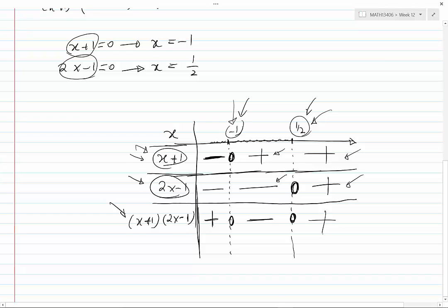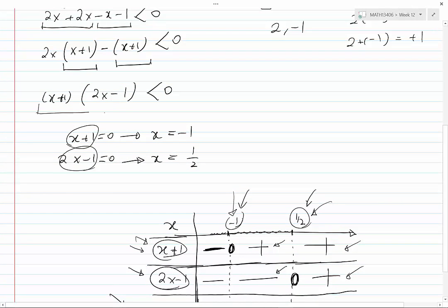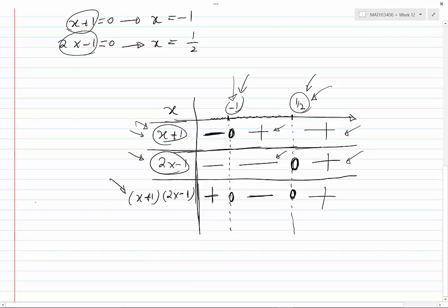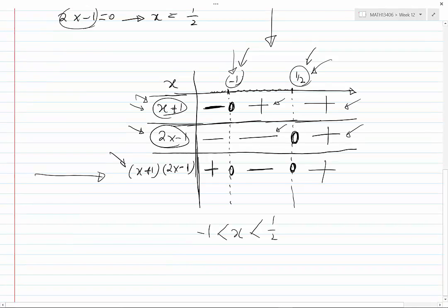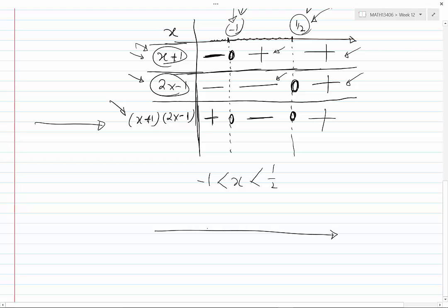Looking at our inequality, we need the product to be less than 0 — that is, negative. From the table, the product is negative when x is between minus 1 and one half. Since the product equals 0 at x equals minus 1 and at x equals one half, we exclude both endpoints. On the real line, we mark the open interval from minus 1 to one half. In interval notation, the solution is (minus 1, one half).